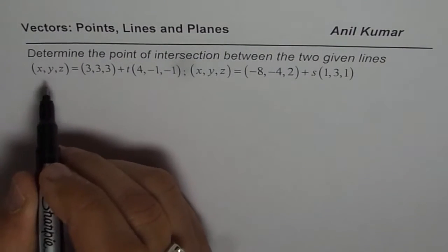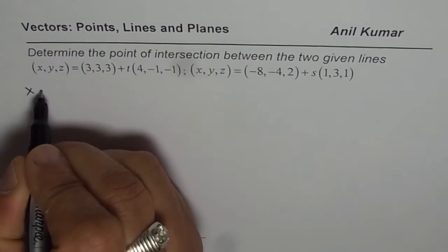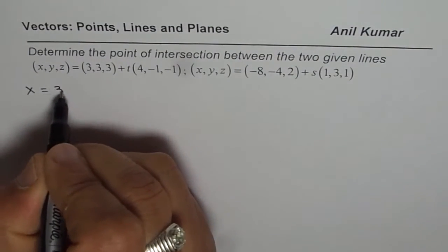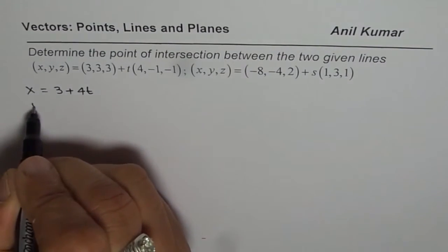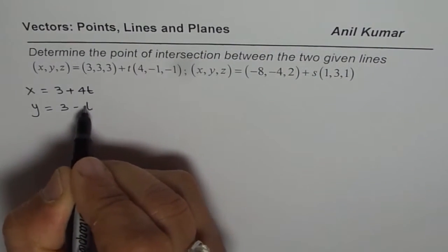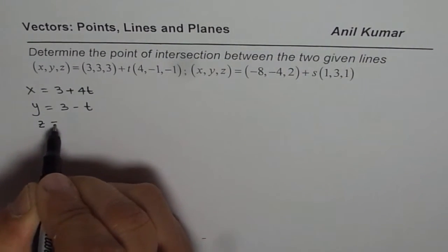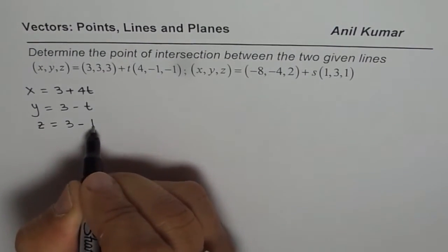We could write it as x equals to what and then equate the values. So we have x equals to 3 plus 4t from the first line. And then we have y equals to 3 minus t, and z equals to 3 minus t.